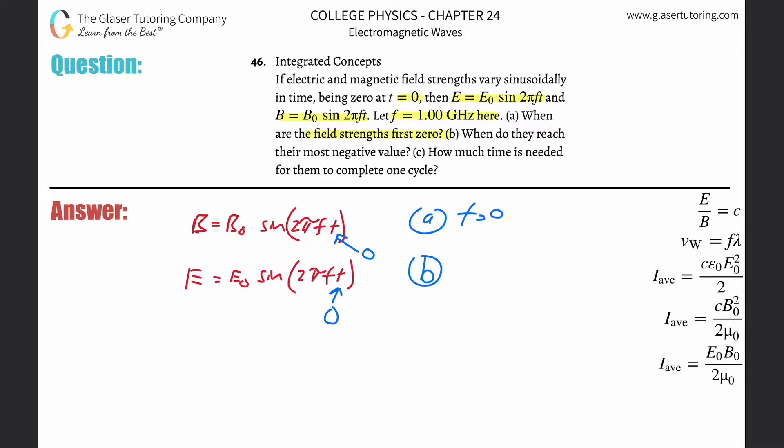Letter b, when do they reach their most negative value? So in order for them to be most negative, the sine here has to be in terms of, now we have to do this in terms of radians. So that whole thing has to be three halves pi.